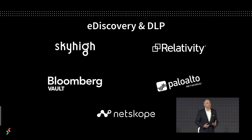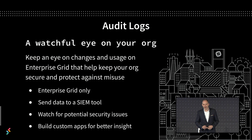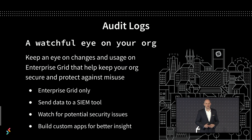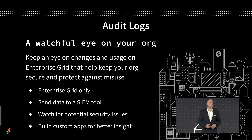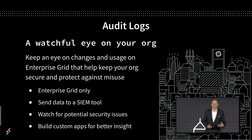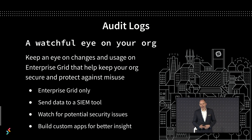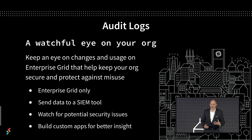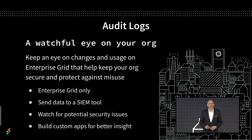If your company builds an eDiscovery or DLP solution and you're interested in getting on this slide, then come talk to us a little later. Next up is the audit logs API — the newest addition to the Slack platform family. These are there to keep a watchful eye on your org. Like eDiscovery and DLP, the audit logs are currently for Enterprise Grid orgs only. These are perfect if you've ever wanted to store data about your Slack workspace or org in an SIEM tool, or you want to get more insights about how your team is actually using Slack.